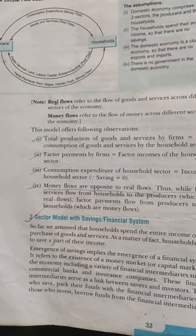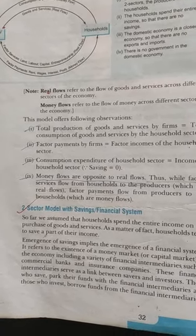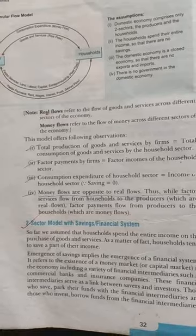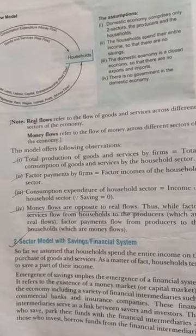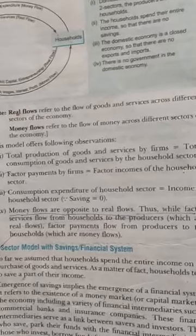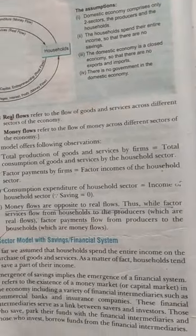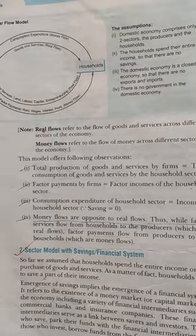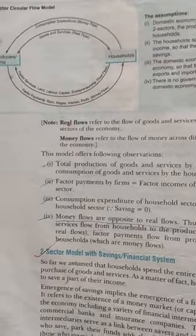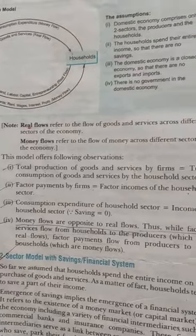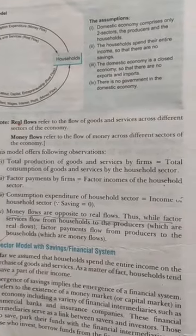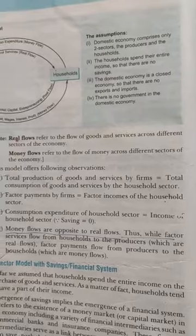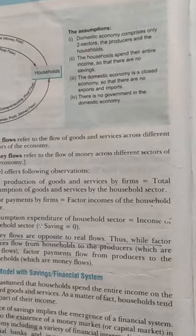Good morning class. Today we will continue from chapter 2, page number 32: macroeconomics two-sector model with saving and financial system. Open your book to page number 32. On the last class we have studied the meaning of circular flow.